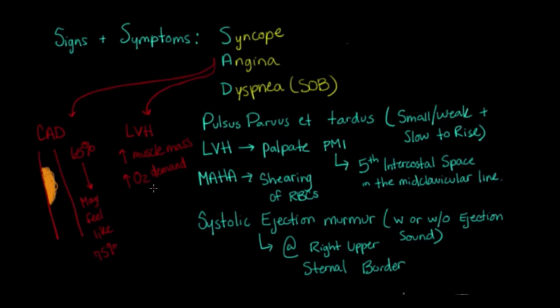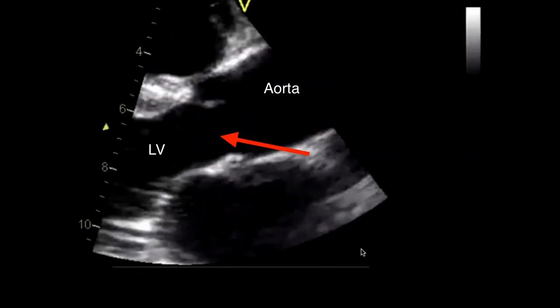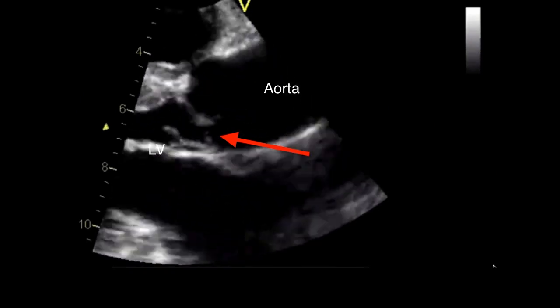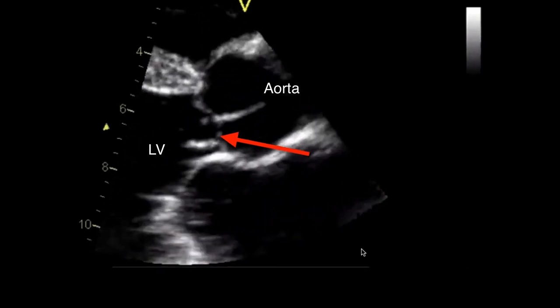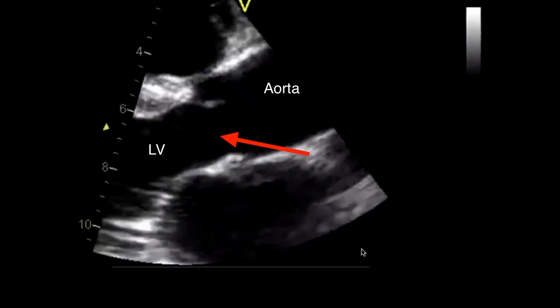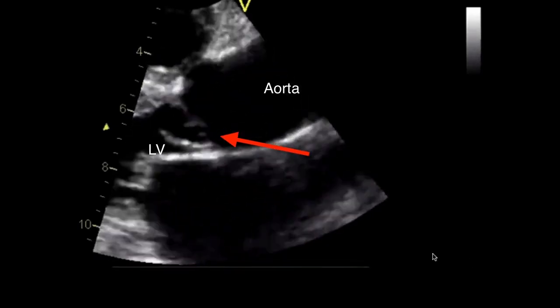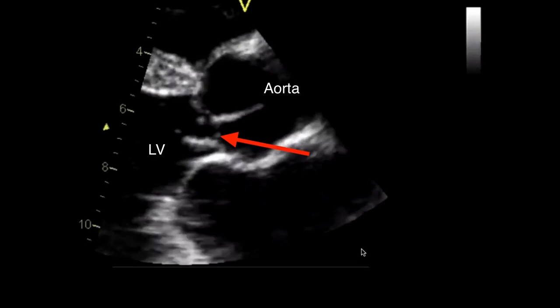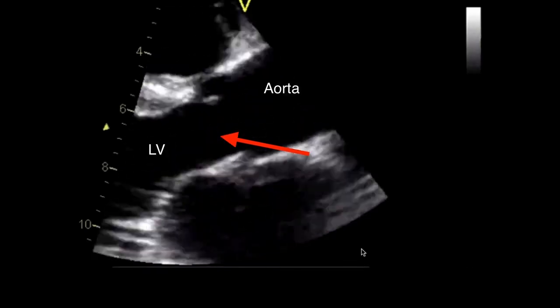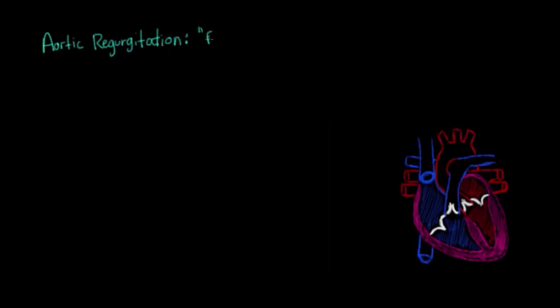So now let's talk about the opposite of aortic stenosis, and that'll be aortic regurgitation. So what you can see here is I've labeled the aorta for you and the left ventricle. And what the arrow's pointing to is actually regurgitation of blood flow. And you can see that part of the valve is actually kind of just flopping there from all this blood coming back into the left ventricle. And so that's aortic regurgitation.